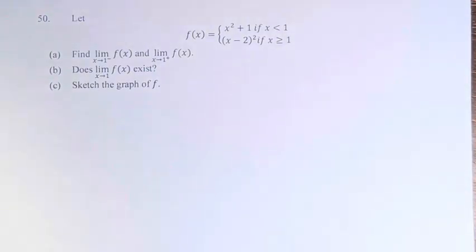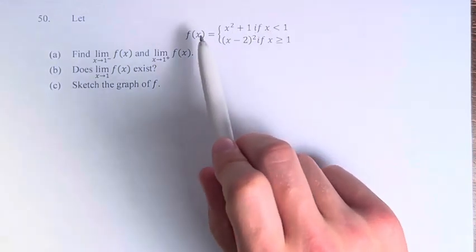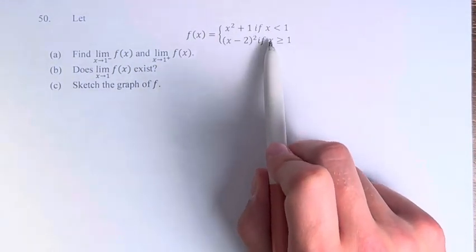Hello and welcome back to another video. In this problem we're told to let f of x equal x squared plus 1 if x is less than 1, and f of x equal x minus 2 squared if x is greater than or equal to 1.